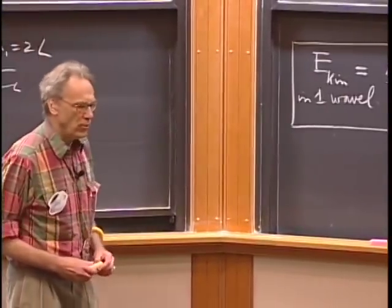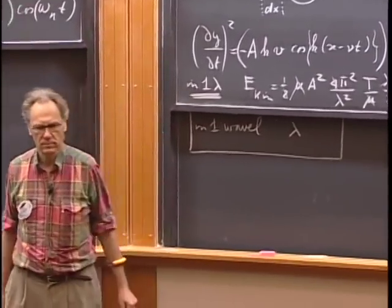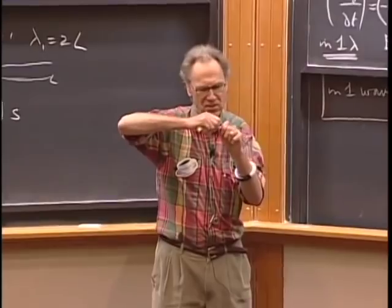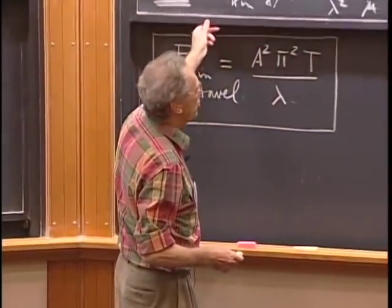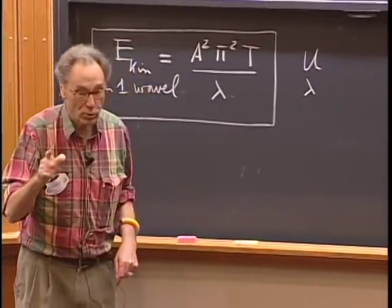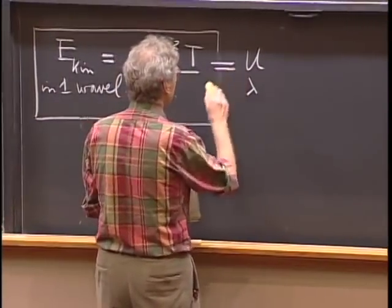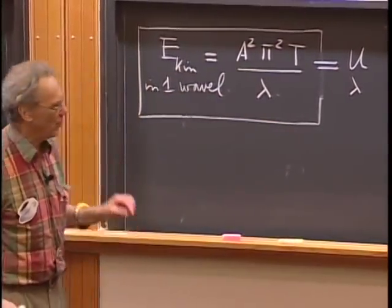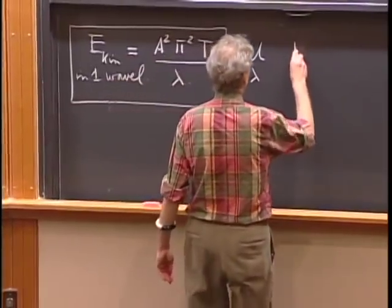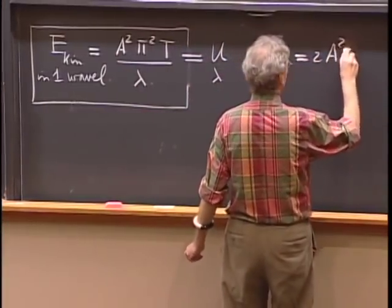There is also potential energy — it takes energy to deform a straight string into a curve, doing work against the tension. The potential energy per wavelength happens to equal the kinetic energy per wavelength (worked out in French), which is by no means obvious. So the total energy in a traveling wave per wavelength is twice the kinetic energy.